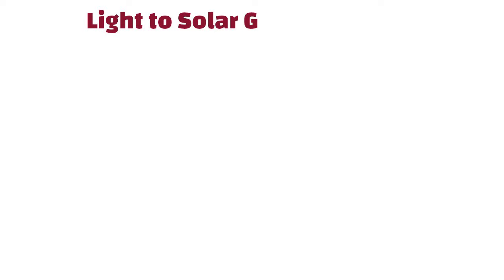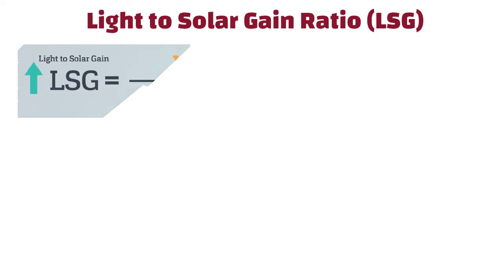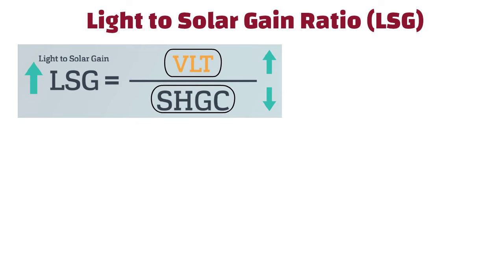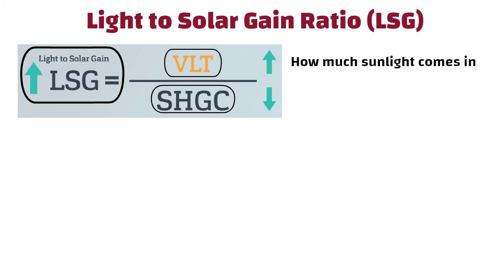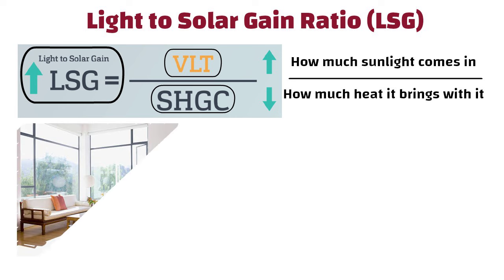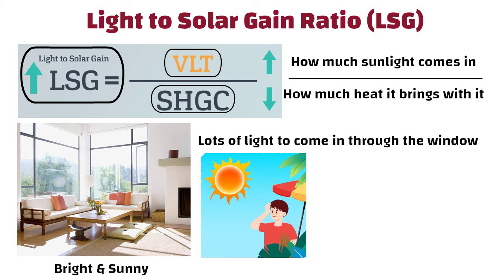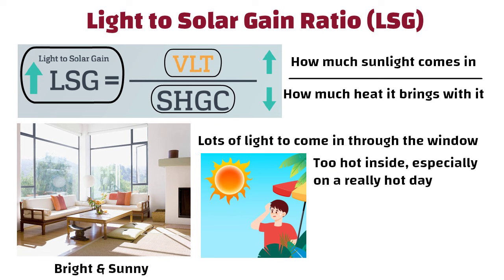Light to Solar Gain ratio — LSG. The LSG ratio is the ratio of visible light transmittance to the solar heat gain coefficient. It looks at how much sunlight comes in compared to how much heat it brings with it. Imagine you want your room to be bright and sunny, but you also don't want it to get too hot inside, especially on a really hot day. The higher the LSG, the brighter the room is without adding excessive amounts of heat.